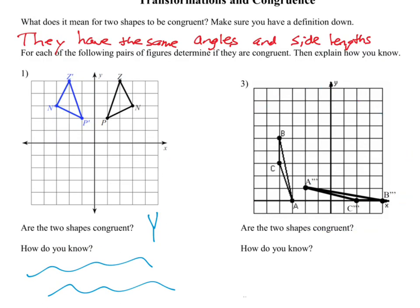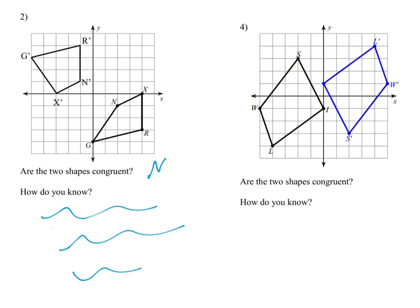Number three: these two shapes are not congruent. If you figure out the distance between B and C and A, it's actually one unit farther. If point A were in a different position, these would be congruent triangles, but it's one to the left and that makes it not the same size.